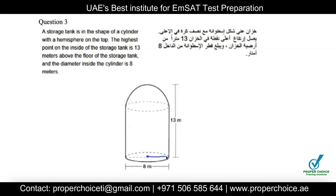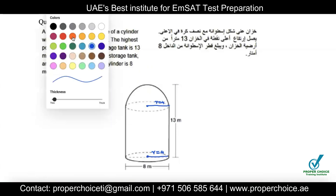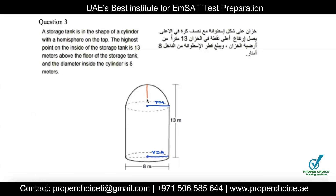Since the radius is 4 m, the hemisphere also has a radius of 4 m — the height of the hemisphere equals its radius. The total height from base to top is 13 m, so the height of the cylindrical portion is 13 − 4 = 9 meters.